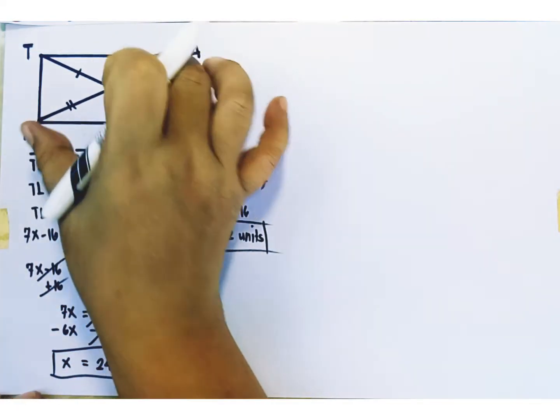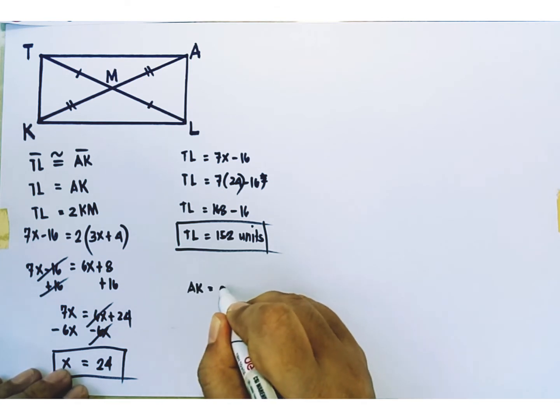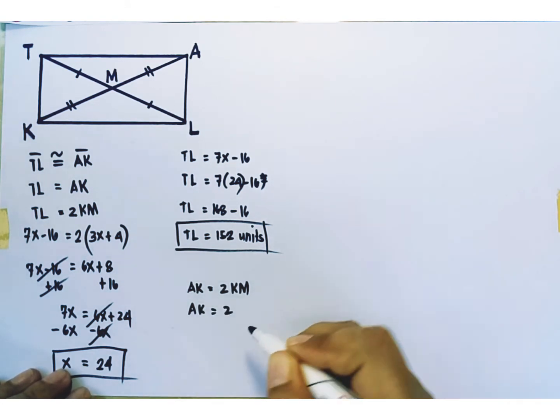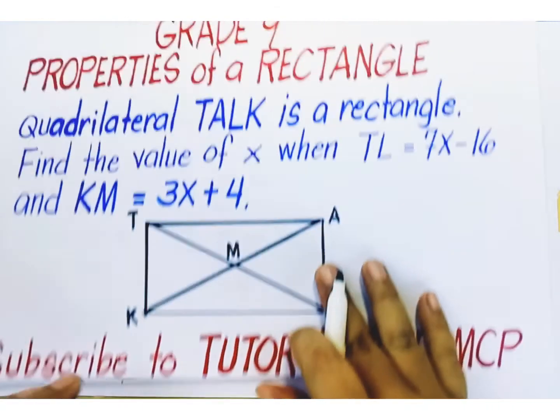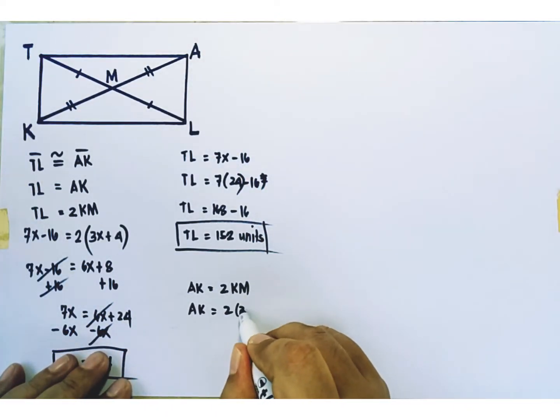Let's solve for the length of diagonal AK. AK is equal to twice KM. KM is represented as 3x plus 4. So, let's replace this with 3x plus 4.